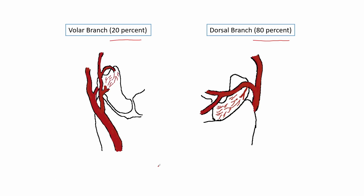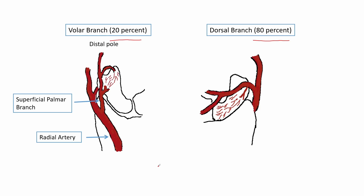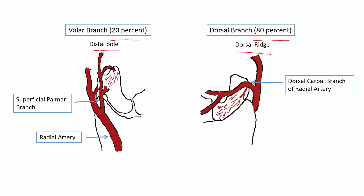The volar branch is a branch of the superficial palmar branch of the radial artery, and it enters the scaphoid through the distal pole. The dorsal branch is a branch of the dorsal carpal branch of the radial artery, and it enters the scaphoid through the dorsal ridge.